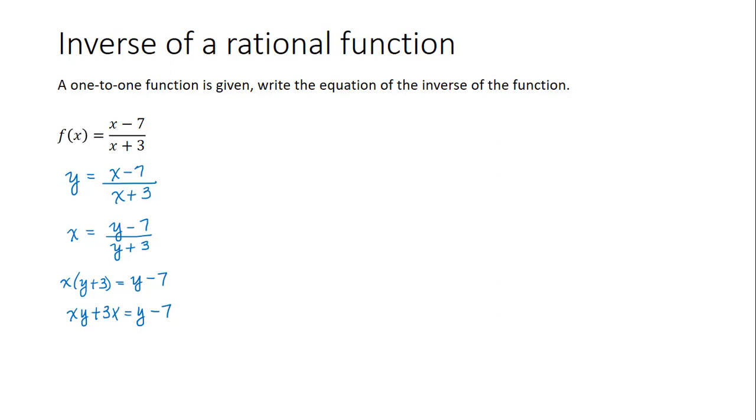So let's first begin by subtracting y to get xy minus y is equal to, and now I'm going to subtract the 3x to move it to the other side, to get negative 3x minus 7.